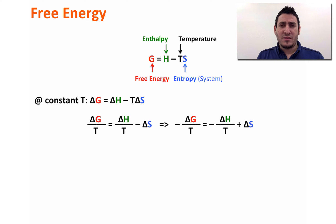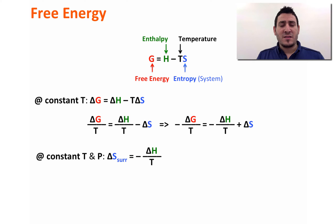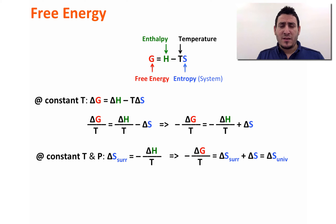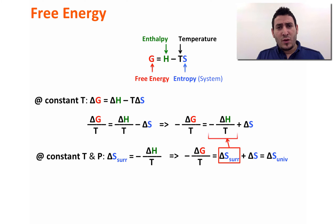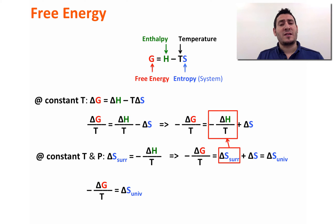The ΔS seen here is the ΔS of the system. In my previous video I explained that minus ΔH over T, at constant temperature and pressure, is equal to ΔS surroundings. So replacing minus ΔH over T with ΔS surroundings gives us: minus ΔG over T is equal to ΔS surroundings plus ΔS system, which equals ΔS universe.